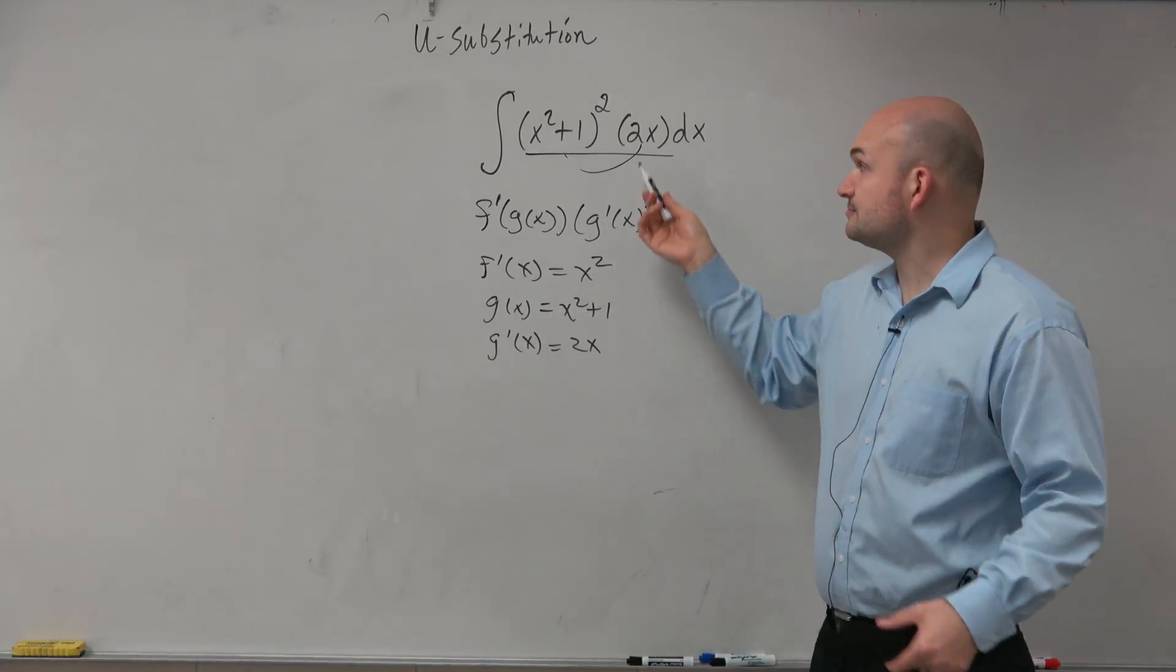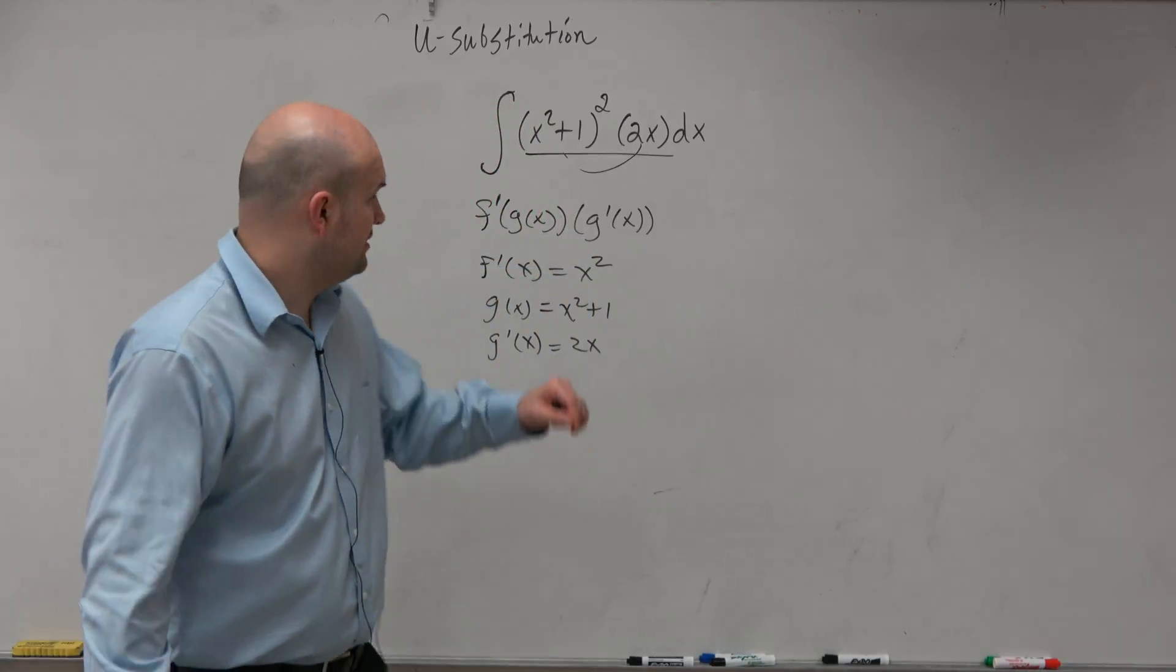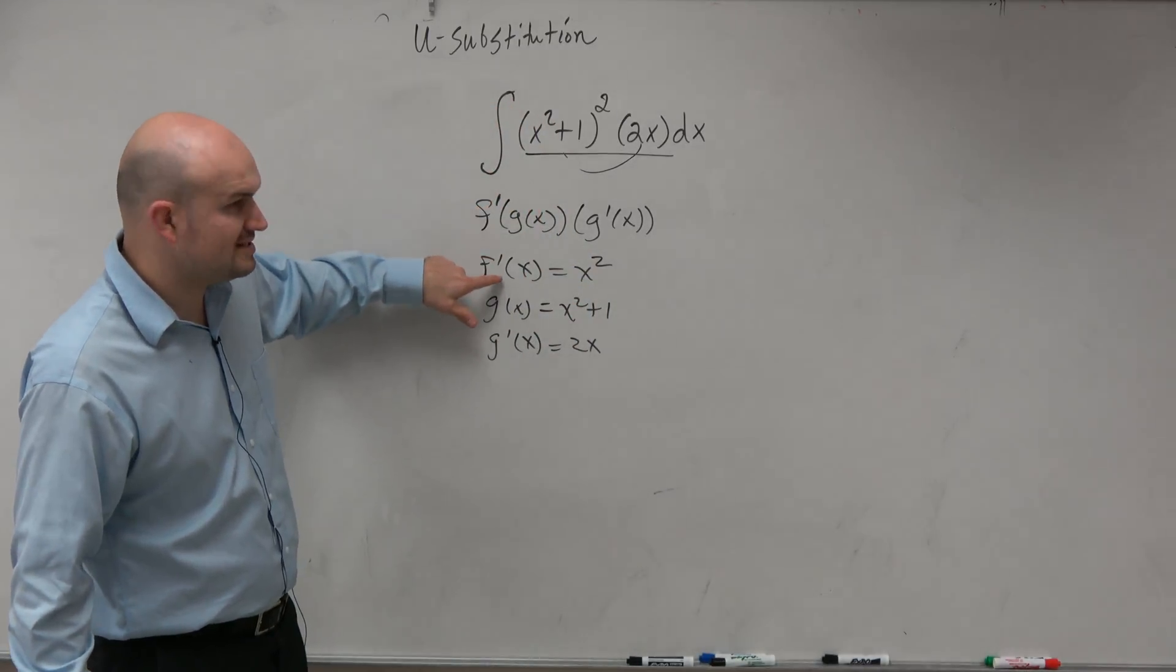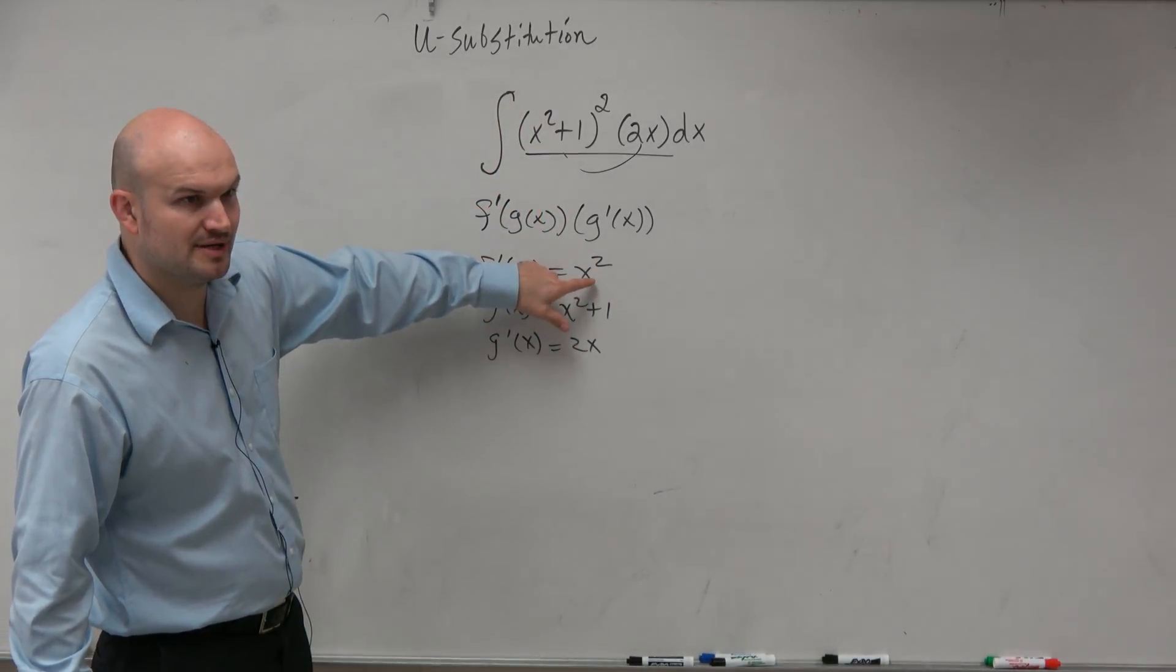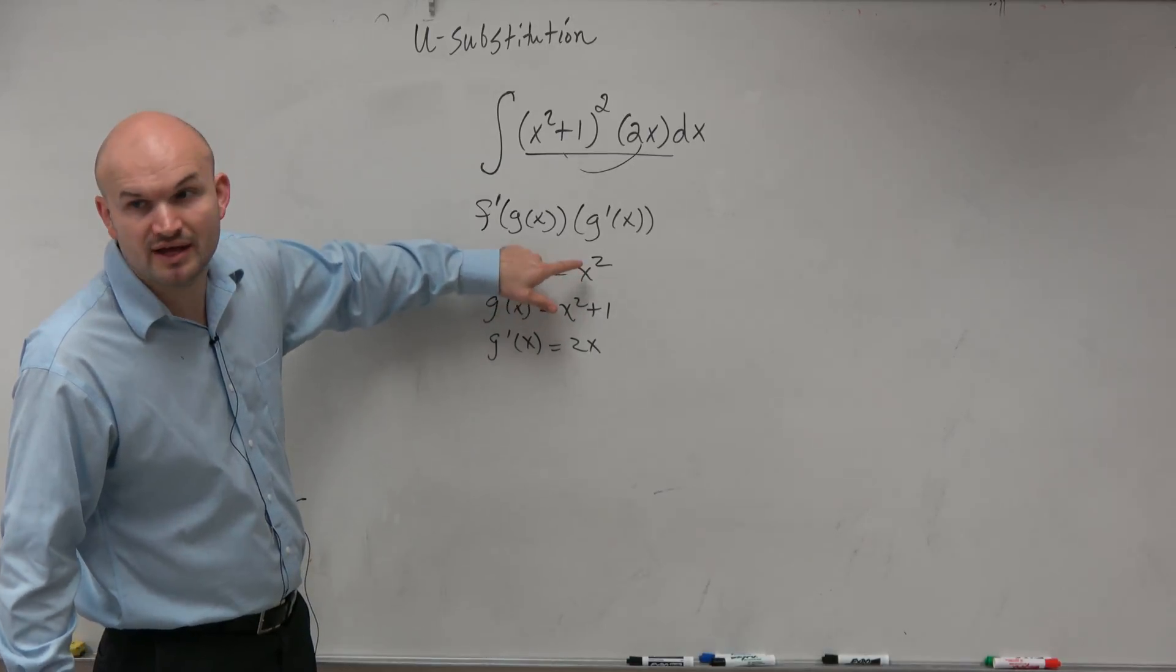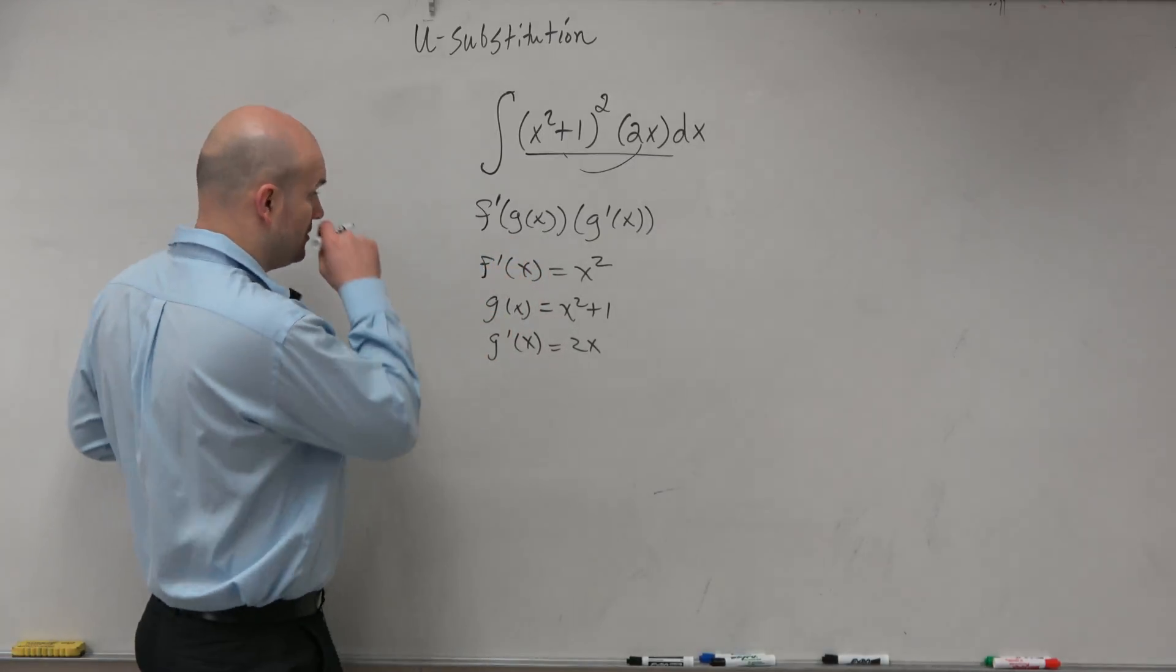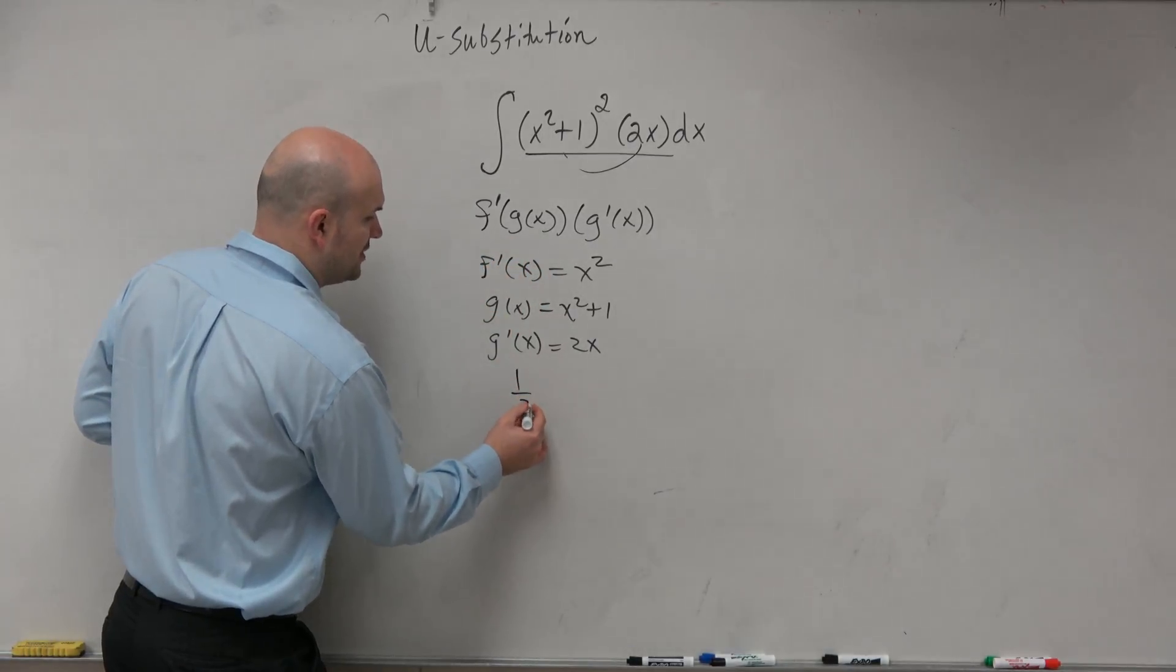And basically what we want to do is figure out, if we're trying to find the integral of this, we want to be able to figure out, we got to f prime, so what would f of x be? If f prime is equal to x squared, then f of x would have to be 1 third x cubed, right? So we'd have 1 third.